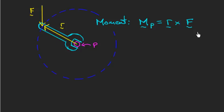And what is the moment again? Well, this vector cross product, what it does is it takes this vector F, the force F,